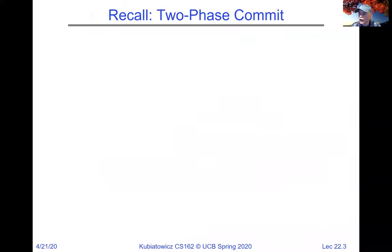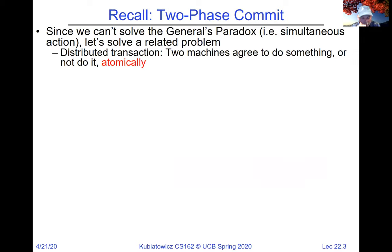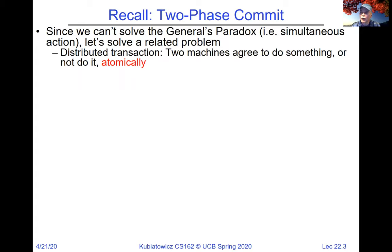At the end of last lecture, we were talking about two-phase commit. We came into two-phase commit because we couldn't solve the general's paradox. The general's paradox was two or more parties having to decide on a time to perform some action, like attacking, with unreliable messages. What we showed is that this is impossible to do. So instead we solve a simpler problem: getting the machines to agree to do something or not do it atomically, without forcing them to all agree on a time.